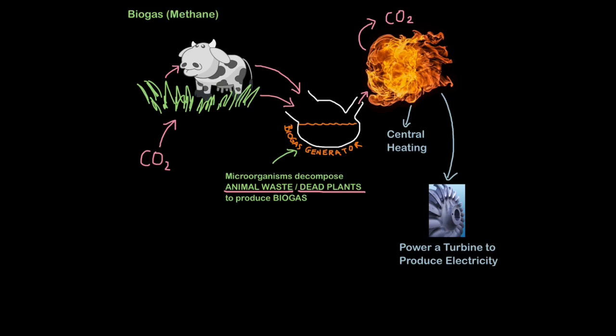This is when we use microorganisms to decompose either animal waste or dead plants to produce a gas called biogas or methane. We can then light that gas to provide energy for central heating, warming water, or even to power a turbine to produce electricity.